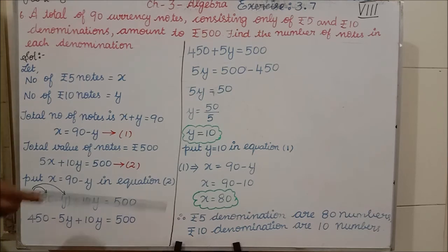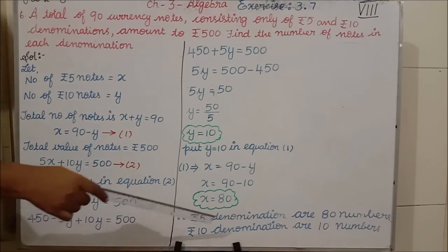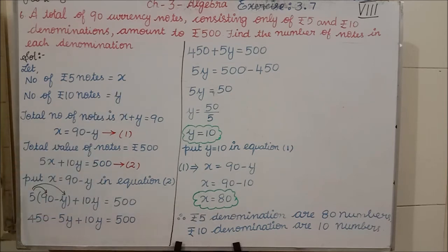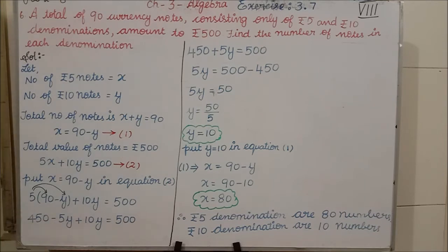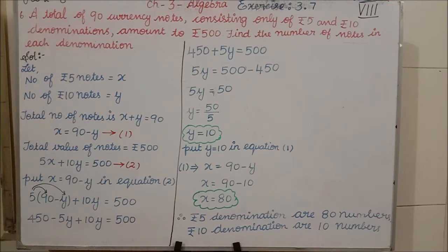Therefore, the number of 5-rupee notes is 80 and the number of 10-rupee notes is 10. If you add all these notes — 80 fives and 10 tens — you get 400 plus 100, which totals 500 rupees.